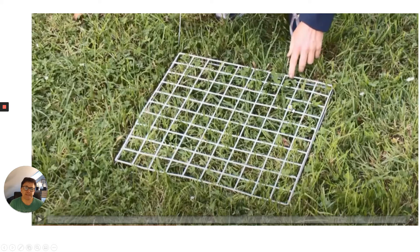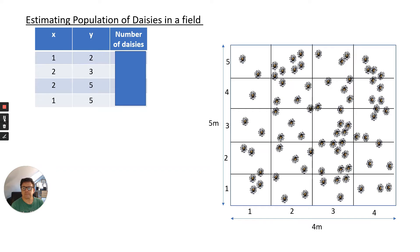When counting daisies, you simply count the number of flowers. For grass plants, where you can't count individual plants, this is where percentage cover is useful. Each small square inside the quadrat equals one percent. If all squares are filled with grass, that is around 100% percentage cover.